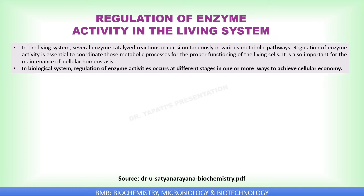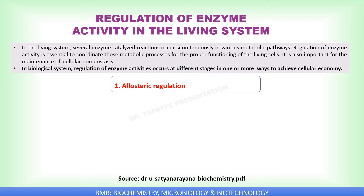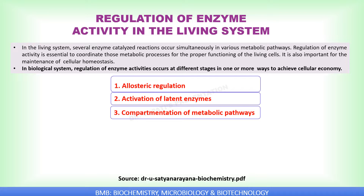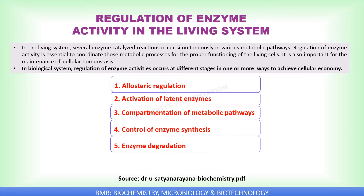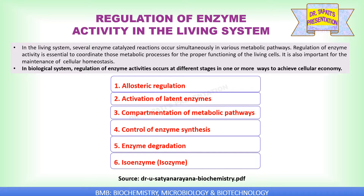Regulation of enzyme activities occurs at different stages in one or more ways to achieve cellular economy. Those different ways are: allosteric regulation, activation of latent enzymes, compartmentation of metabolic pathways, control of enzyme synthesis, enzyme degradation, and isozymes.